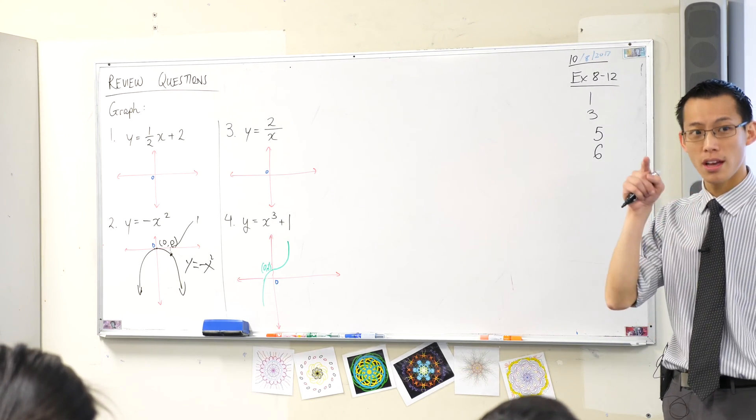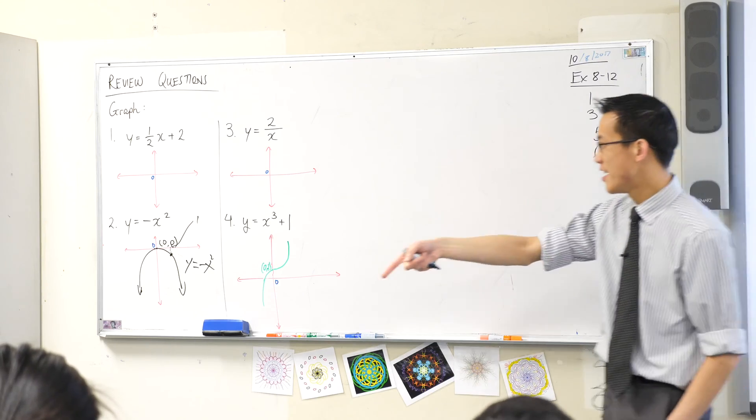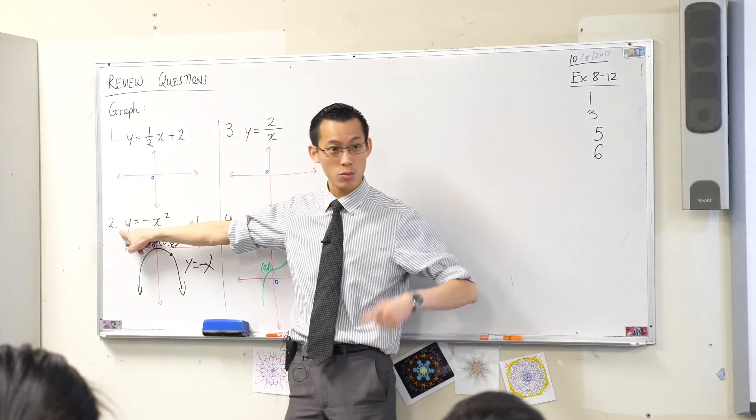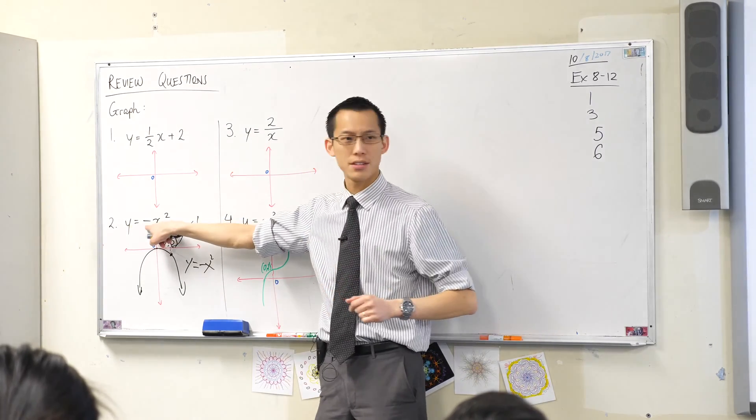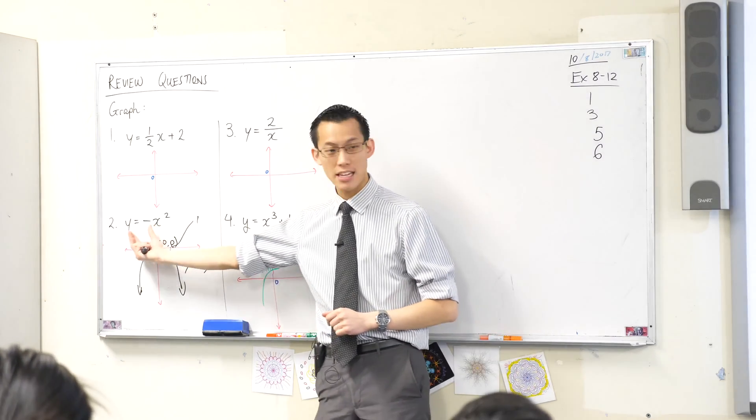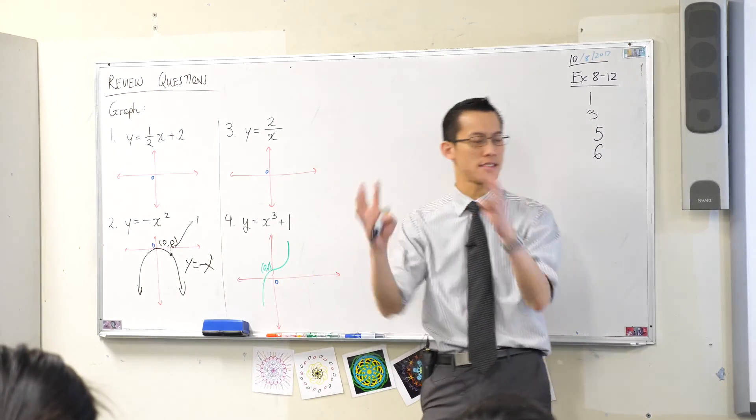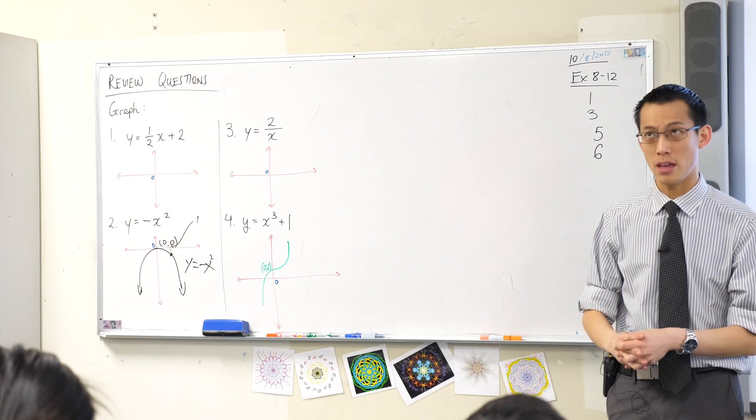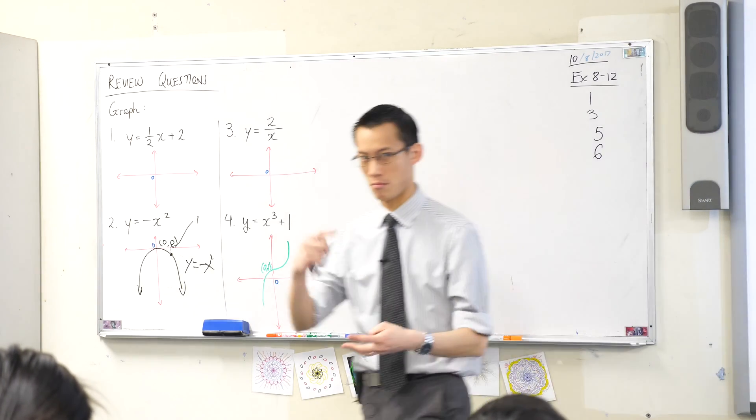I'm going to substitute in, right? So if x is equal to 1, then y will be equal to, watch carefully, minus 1 squared. I'm taking that number and I'm popping it into the original equation that defines this whole situation. So what is y then? y will be just minus 1.